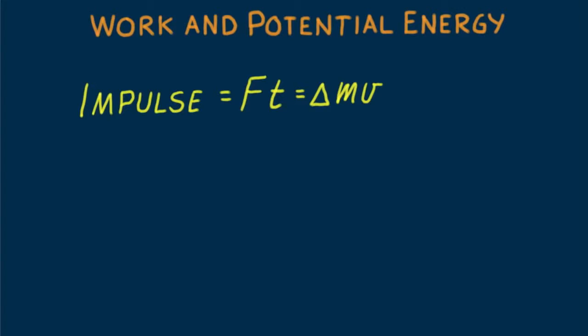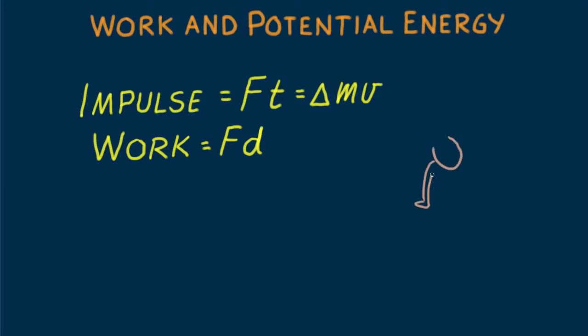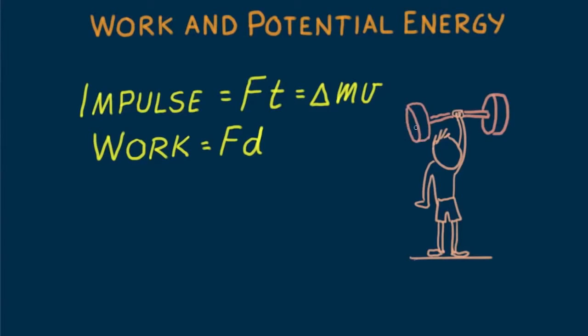Now we want to discuss something similar: multiplying the force on something by the distance moved by that force. The quantity force times distance is called work. To calculate the work on something, force and distance moved must be in the same direction.